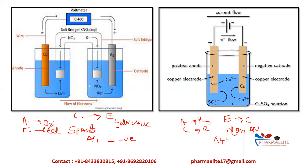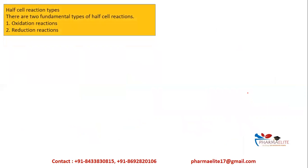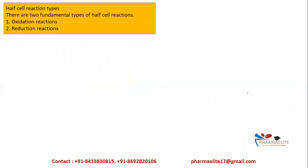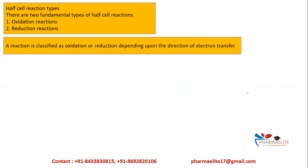Remember: anode is always undergoing oxidation, and cathode is undergoing reduction — whether it is a galvanic cell or an electrolytic cell. Under half-cell reactions, there are two types: oxidation reaction and reduction reaction, both involving electron transfer.